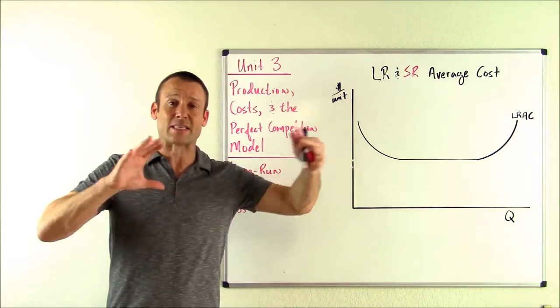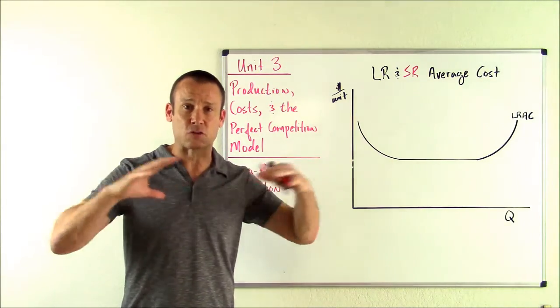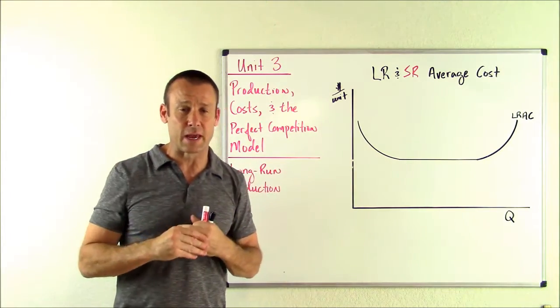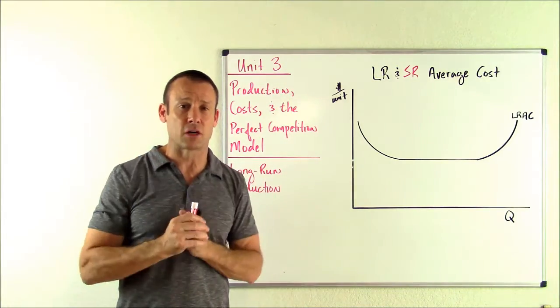hey, how about if we increase the scale, the size and scope of our production, make our plants incredibly big, try to get as much specialization as we can, buy in bulk, things like that. What is our average cost in the long run like?